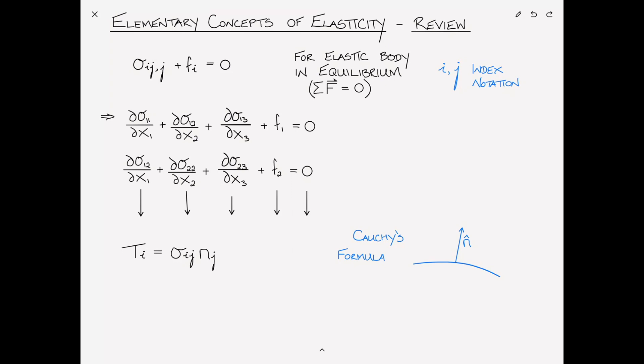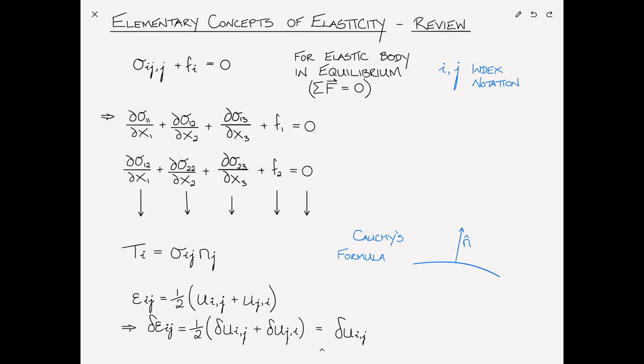One more formula to review: εᵢⱼ, the strains, is equal to ½(uᵢ,ⱼ + uⱼ,ᵢ), where u is the displacement. This equation is a strain-displacement relation. I can very simply take the variation of the strain as ½(δuᵢ,ⱼ + δuⱼ,ᵢ). For the purposes of our problems, this can be simplified to δuᵢ,ⱼ due to symmetry on the material level.